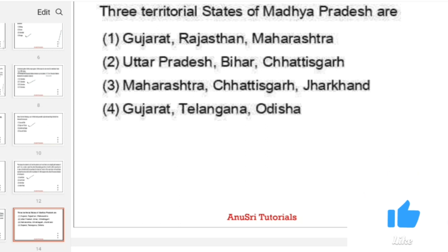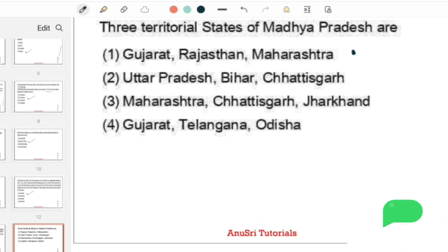Three territorial states of Madhya Pradesh are: first option Gujarat, Rajasthan, Maharashtra; second one is Uttar Pradesh, Bihar, Chhattisgarh; third one Maharashtra, Chhattisgarh, Jharkhand; and fourth option is Telangana, Gujarat, Odisha. The answer is Gujarat, Rajasthan, Maharashtra.